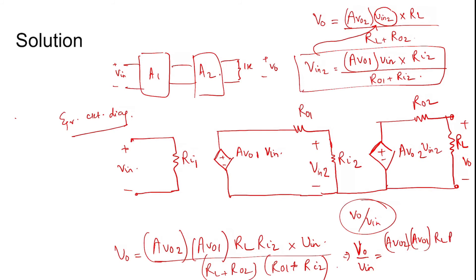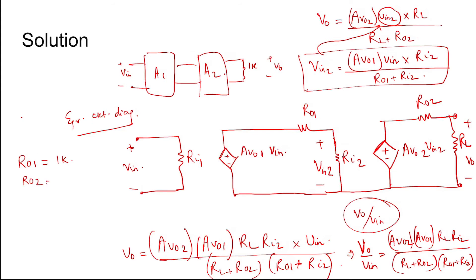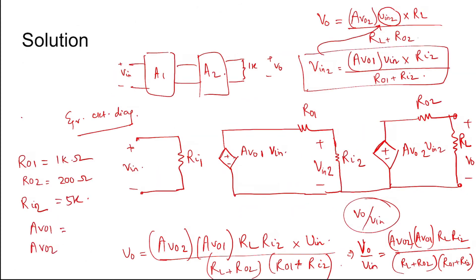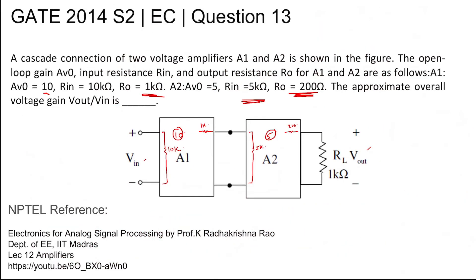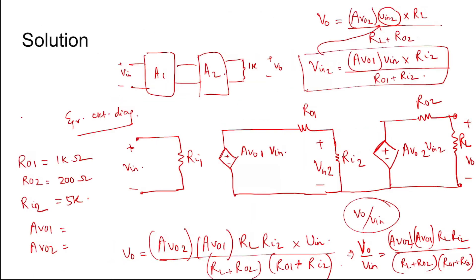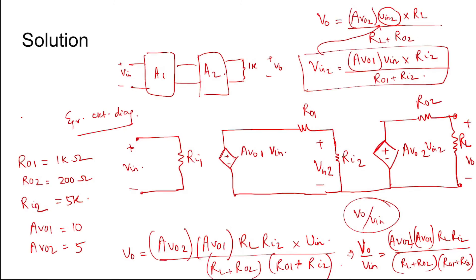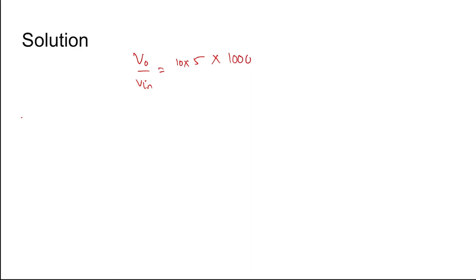Substituting values: Ro1 = 1 kΩ, Ro2 = 200 Ω, Ri2 = 5 kΩ, Av01 = 10, and Av02 = 5. So Vout/Vin = Av02 × Av01 × RL × Ri2 / [(RL + Ro2) × (Ro1 + Ri2)] = 10 × 5 × RL × Ri2 / [(RL + Ro2) × (Ro1 + Ri2)].